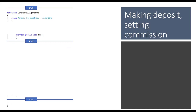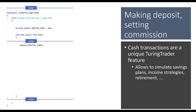Next, set the initial cash — we use one million dollars to ensure enough contracts to trade and avoid rounding errors, aiming for double-digit lots. TuringTrader differs from other simulators: you don't just set initial cash, you actually make a deposit. You can make multiple deposits and also withdraw, which allows simulating savings plans, income strategies, retirement strategies, and similar things that other simulators can't handle.